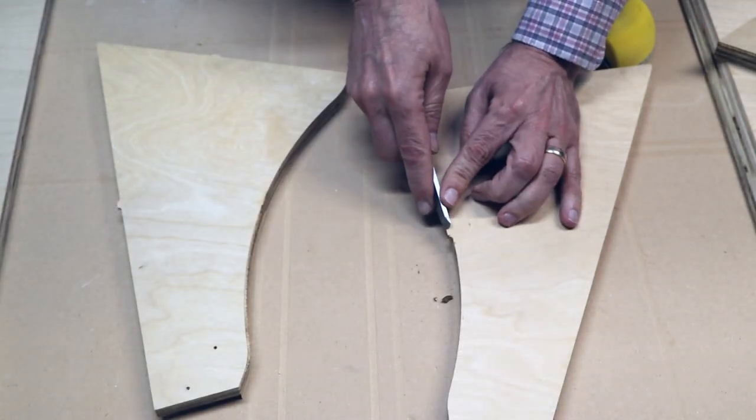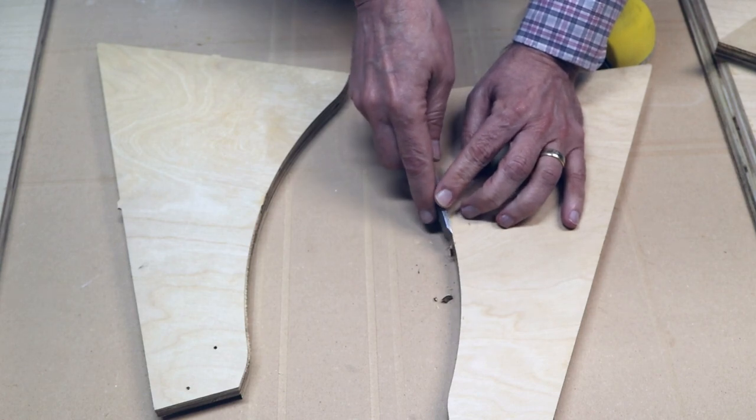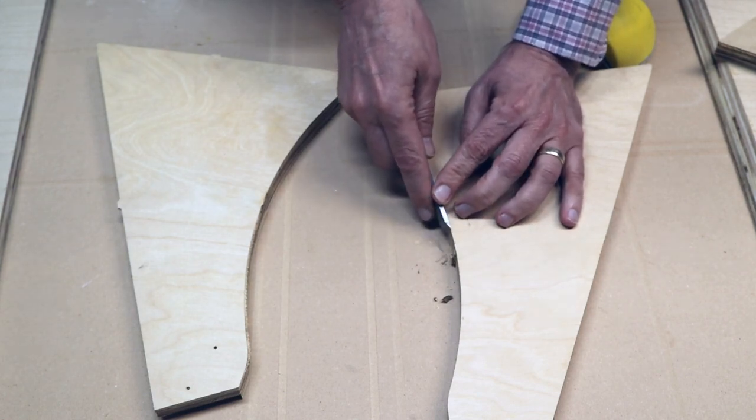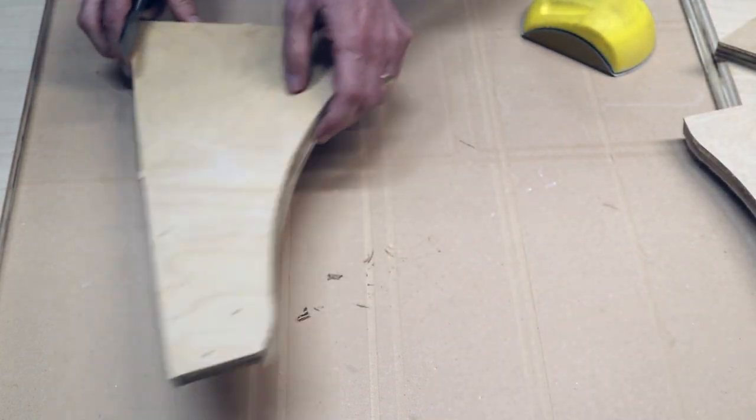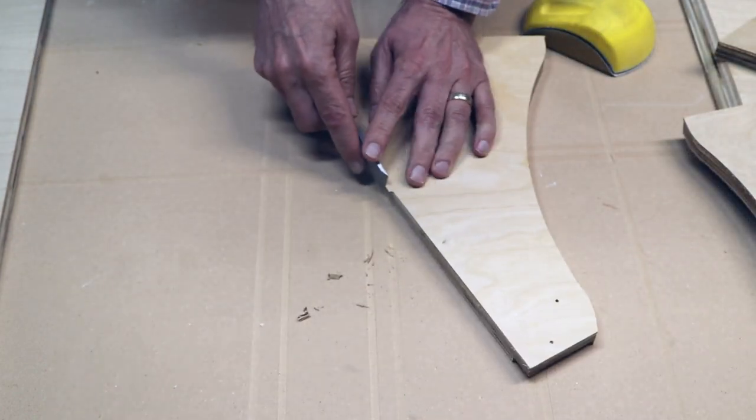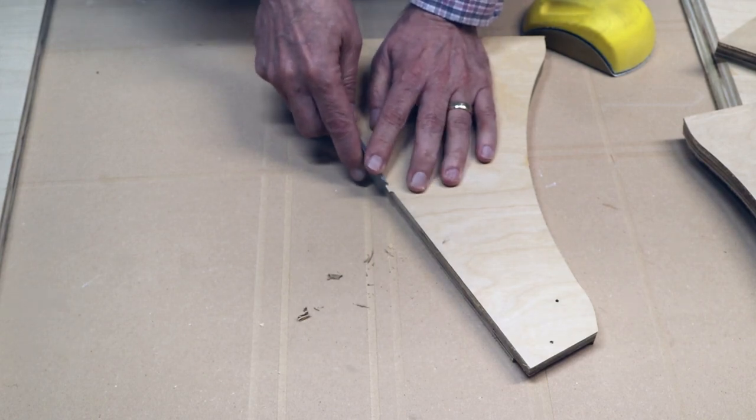I found that a good way to remove the tabs is with a chisel. You can see I'm doing a slicing action and keeping it against the vertical side of the part. That makes it quite easy to slice this off very cleanly.